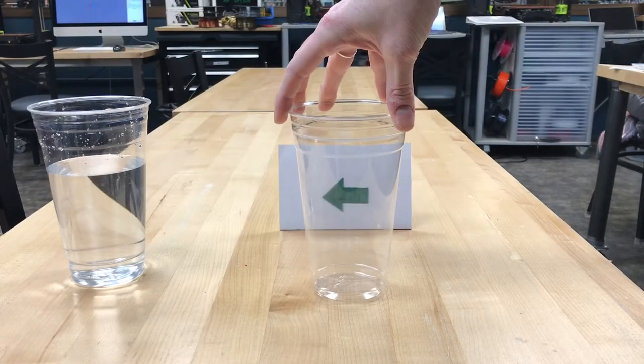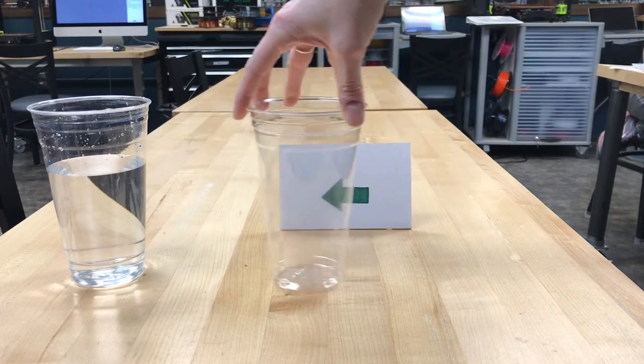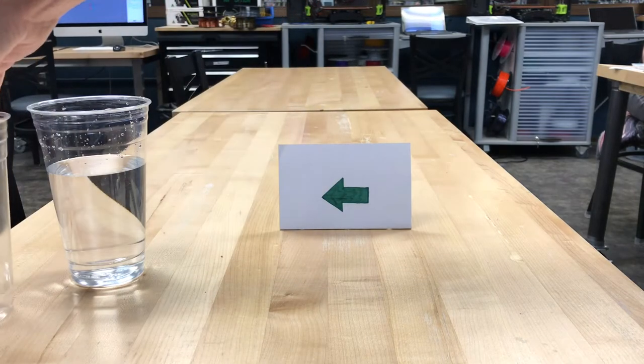Alright, so this one's set up a little bit like a magic trick. If I pass this glass in front of the arrow, the arrow stays pointing the same direction.